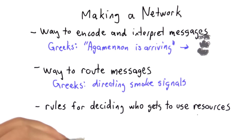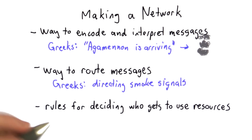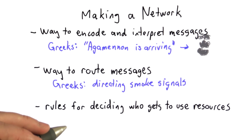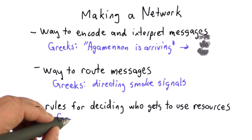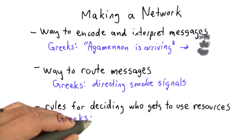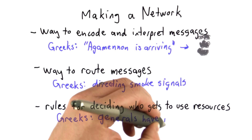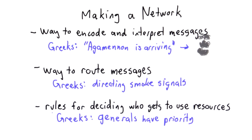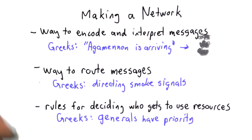We need rules for deciding who gets to use resources. If there are two messages that want to go through the same place, only one of those can be sent at a time, so we need some way to decide. For the Greeks, I don't know what their rules were, but let's assume their rule was: if you're a general, your message has priority. We're going to need all these same things for the internet. Before we talk about how they're done on the internet, I want to introduce the two main ways that we measure networks.